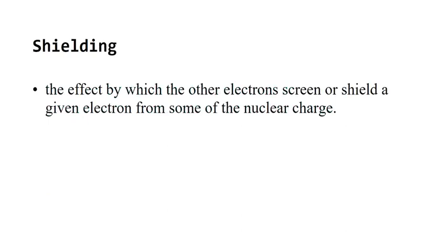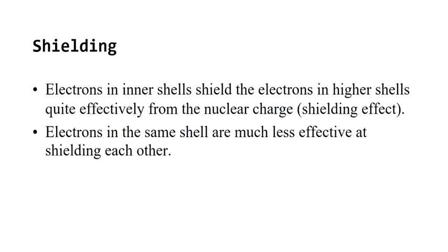Shielding is the effect by which other electrons screen or shield a given electron from some of the nuclear charge — generally by core electrons. Electrons in inner shells shield electrons in higher shells quite effectively. Electrons in the same shell are much less effective at shielding each other. When discussing this phenomenon, we discuss it as repulsion — what forces influence the behavior of electrons around an atom is electron-electron repulsion.